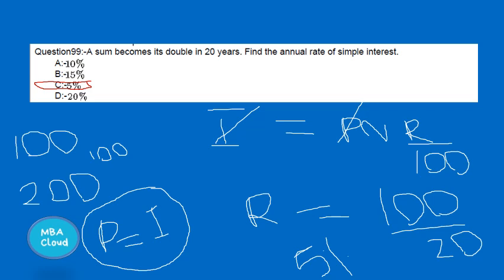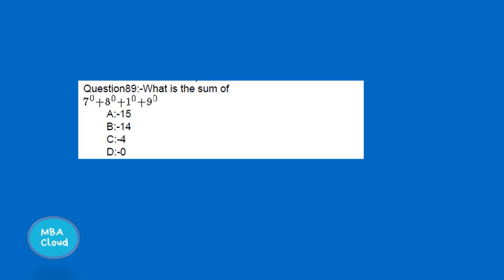Now for another question: any number raised to the power of zero is equal to 1. A raised to 1, a squared, a cubed — a raise to r equals a to the power m. For example: 7 raised to zero, 8 raised to zero, 1 raised to zero, 9 raised to zero — all equal 1.